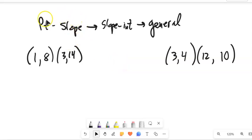I want to talk about how to go from point-slope to slope-intercept to general form. So this is a little bit of algebra we get to do. First thing I'm going to do, I want a line that goes through these two points. I'm going to write it in point-slope, then manipulate it into slope-intercept, then manipulate that into general form.